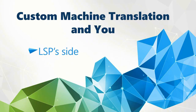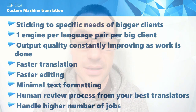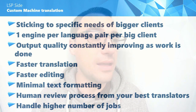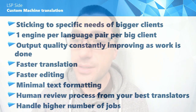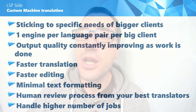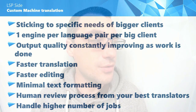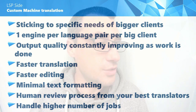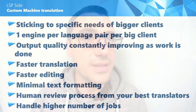Now let's talk about what can happen from the language service provider's side. It will enable them to stick to the specific needs of bigger clients — for example, having one large engine per major client. That helps output quality to constantly improve as work is done. What is being translated can then be used to update the engine to make it work better, helping to achieve faster translation over time. The translation team can work faster with better suggestions from the engine, and this allows for faster editing since fewer errors are introduced as things progress.